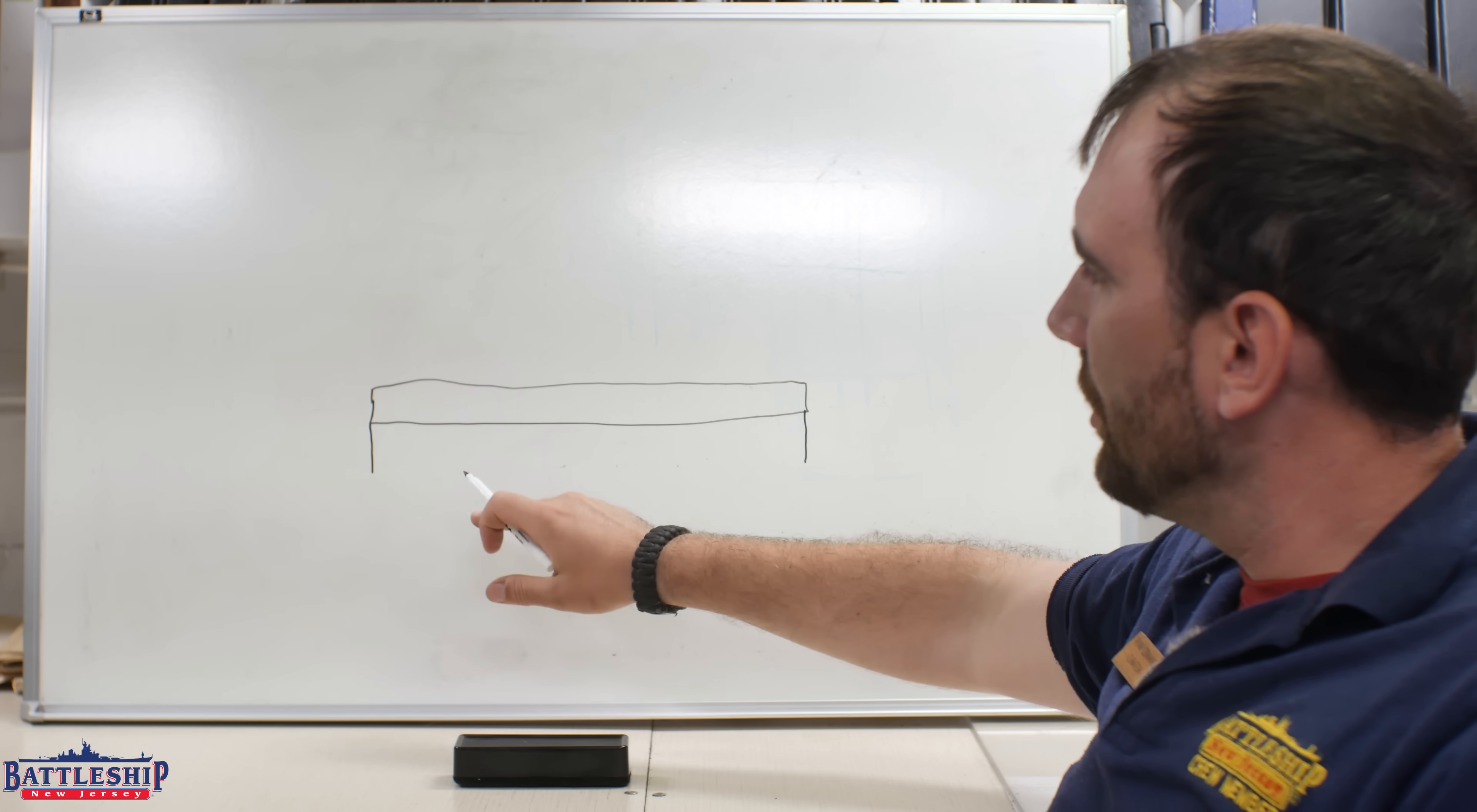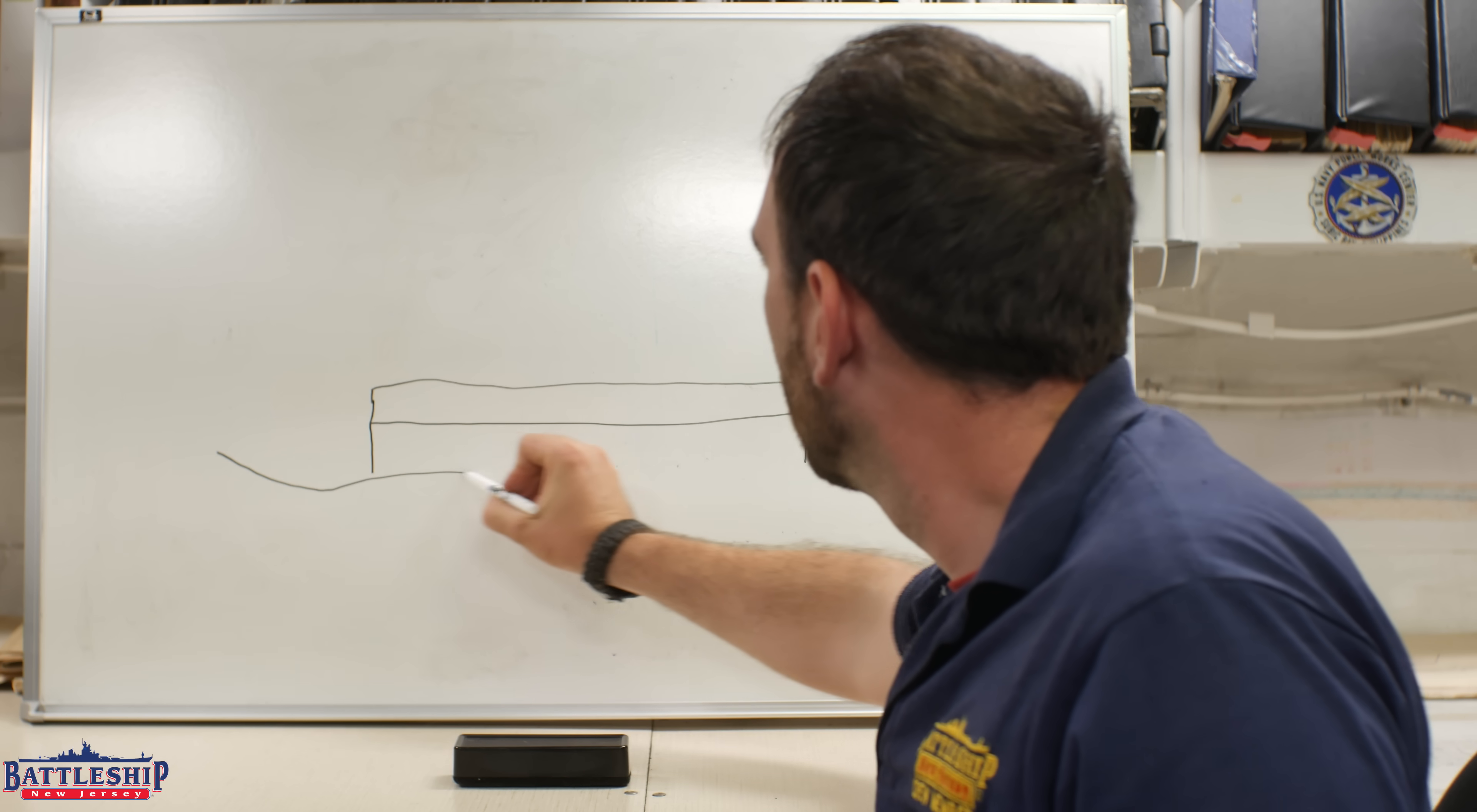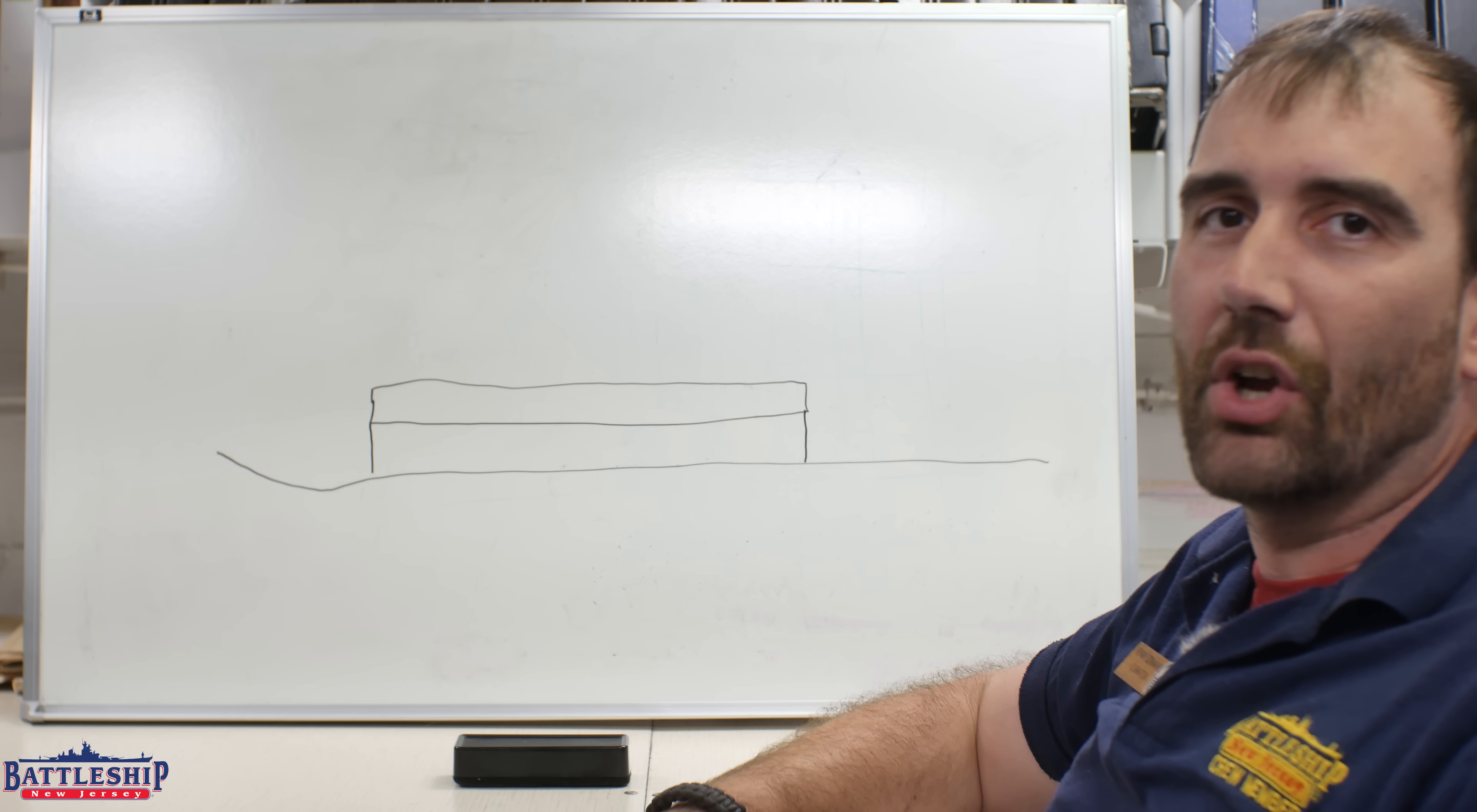This tapers all the way down to the very bottom of the ship, and the Iowa-class battleships have a triple bottom on them. That forms the lower part of the armored citadel.